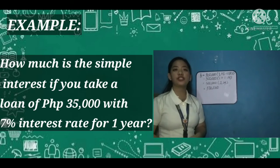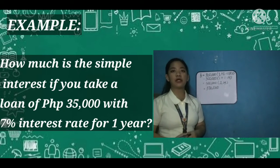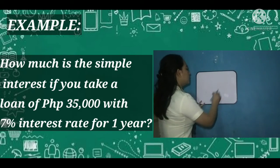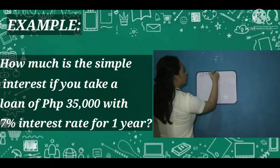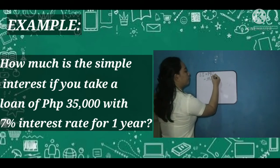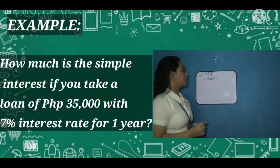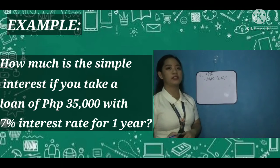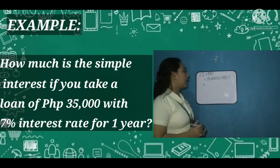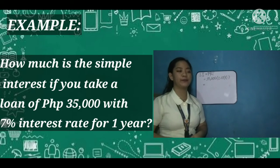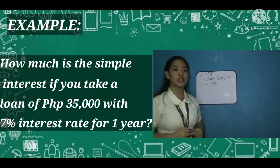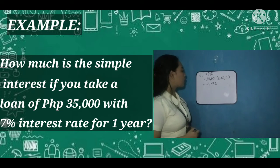How about number 3? How much is the simple interest if you take a loan of 35,000 with 7% interest for 1 year? SI = P × R × T = 35,000 × 0.07 × 1 = 2,450. So the simple interest of a 35,000 loan with 7% interest in one year is 2,450.